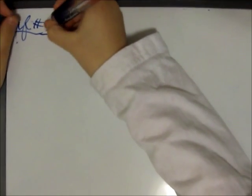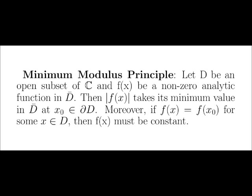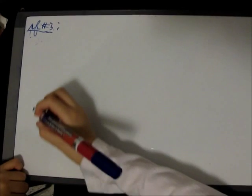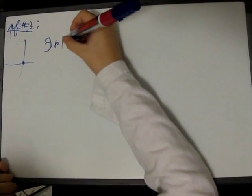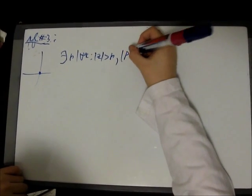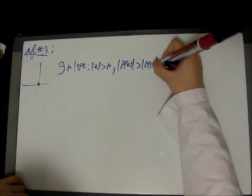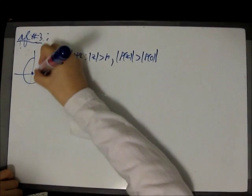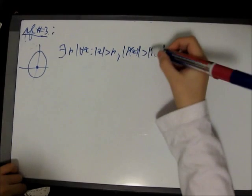Now, this proof number 3 goes with the minimum modulus principle. These are the axes, and this is the origin. We know that there exists an R such that for all Z with the modulus of Z greater than R, the modulus of P of Z is greater than the modulus of P of 0. So, if this is R outside this ball, the modulus of P of Z is greater than the modulus of P of 0.